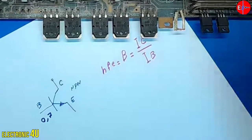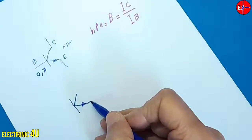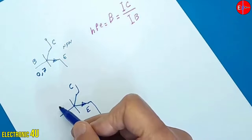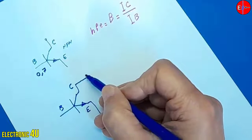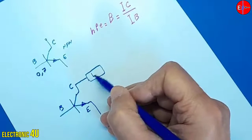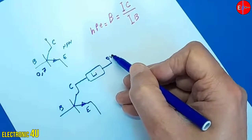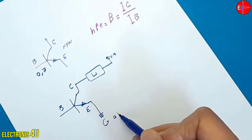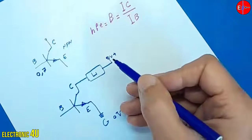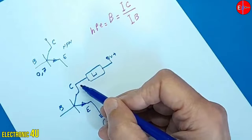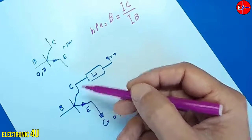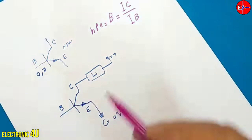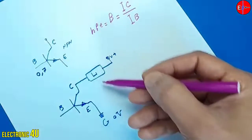I will draw a circuit. We have the collector, emitter, and base. Often, the consumer is connected to the collector. The voltage is applied here, and the emitter is connected to zero volts - the ground. The voltage enters the consumer and then reaches the collector. When the transistor turns on, this voltage reaches the emitter from the collector. The emitter was connected to zero volts, so the circuit is complete and current flows.